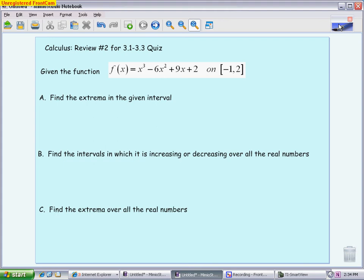This is the second video in a series of two to get ready for the 3.1-3.3 quiz in calculus, taking another variety of questions. This one only has two slides because the first has multiple parts. We have a cubic function, f(x) = x³ - 6x² + 9x + 2, and a closed interval from -1 to 2.